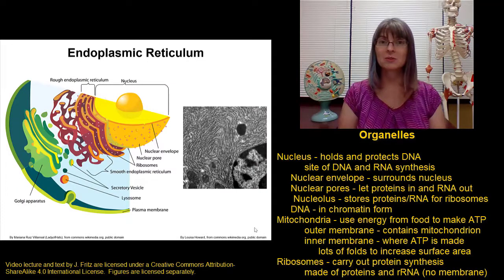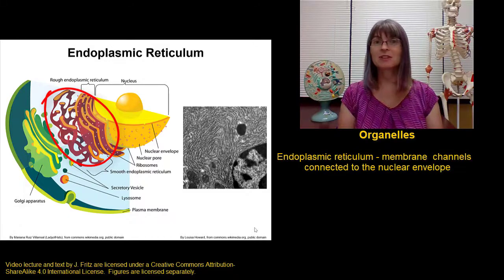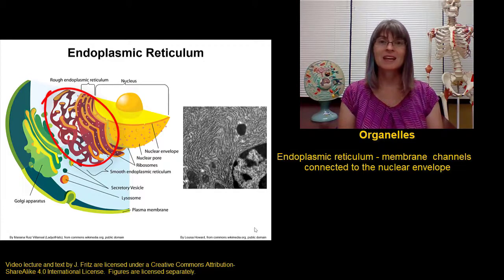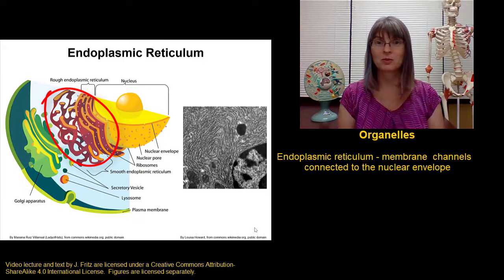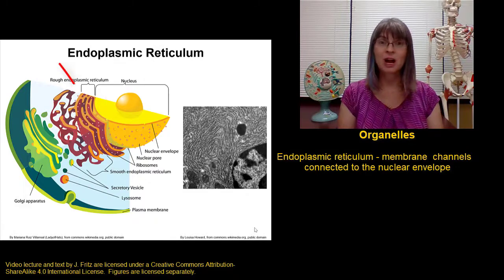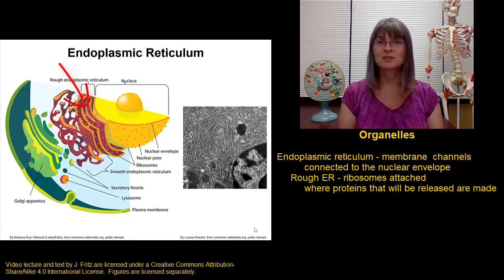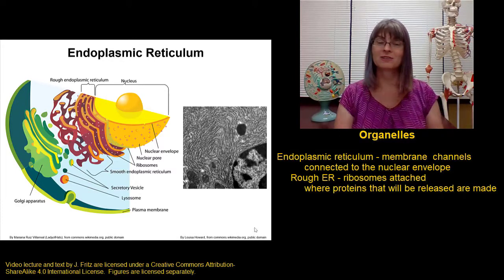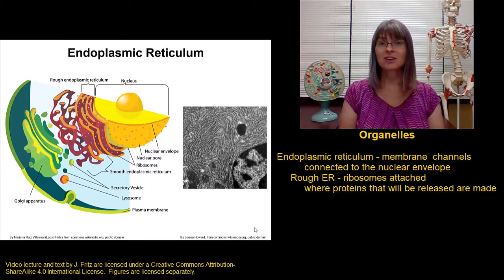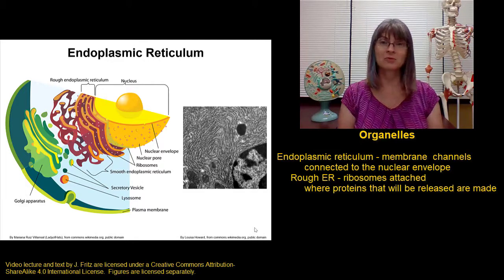If the ribosomes are the workers making the proteins, the endoplasmic reticulum is like the factory — this is where a lot of synthesis is happening. The endoplasmic reticulum is a series of membrane channels that connect all the way to the nuclear envelope. Some of these channels have ribosomes attached to them; this is called rough endoplasmic reticulum, or rough ER. This is the location of synthesis of proteins that are going to be secreted from the cell. The ribosomes make the proteins, they go into the endoplasmic reticulum, and from there they'll be packaged and processed for release. Cells that carry out a lot of secretion, like the pancreas — which makes a lot of digestive enzymes and hormones — have a lot of rough endoplasmic reticulum.